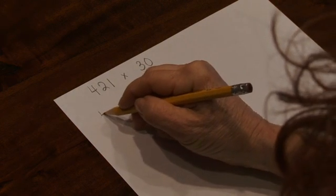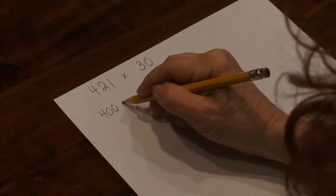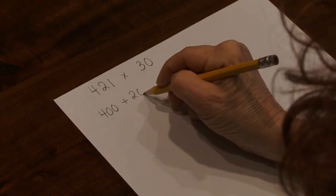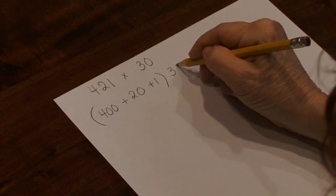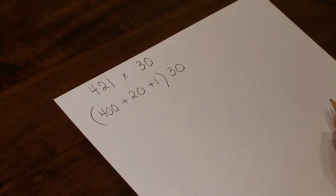421 taken 30 times. Let's break down the multiplicand to 400 plus 20 plus 1, and we'll multiply each part of the multiplicand by the multiplier 30.